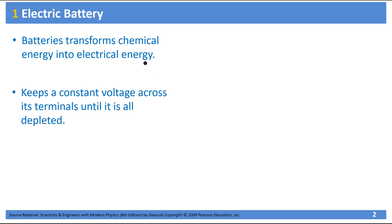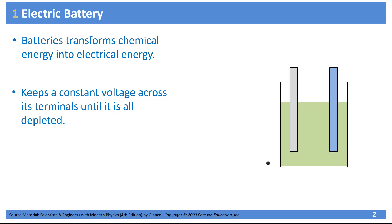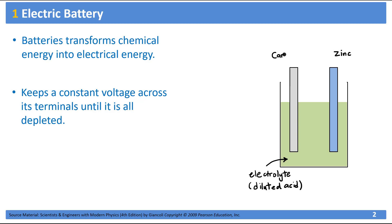To get ourselves familiar with the working of a battery, let's consider a very simple acid-based car battery. In these kinds of batteries, the medium that allows the charge transfer between the electrodes — which, by the way, is called the electrolyte — this electrolyte is acid-based, a diluted acid. And for the electrodes, we will have a zinc electrode and a carbon electrode.